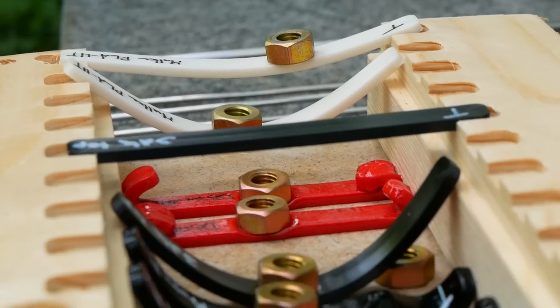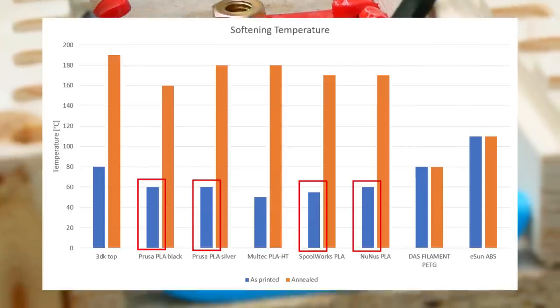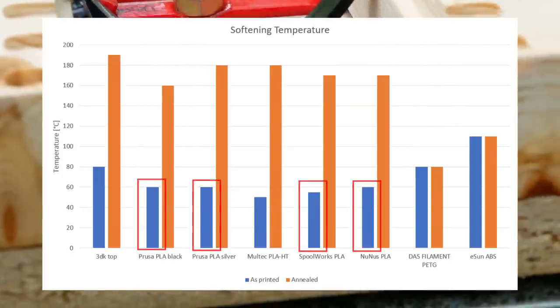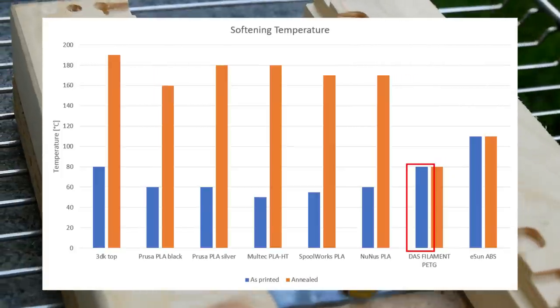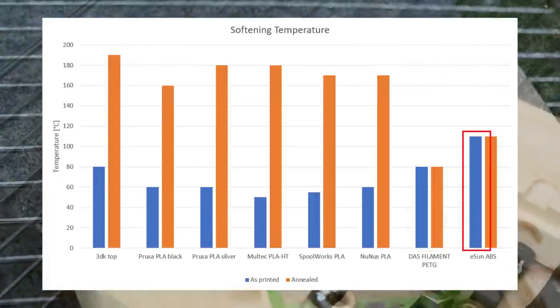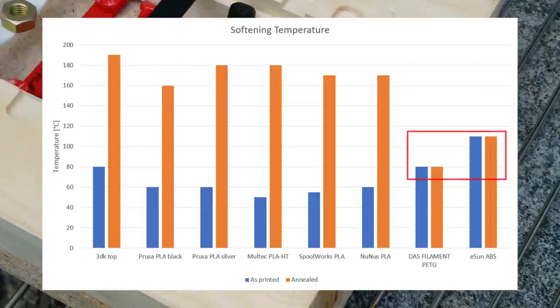So let's summarize the result. As we probably all know unannealed PLA is not suitable for high temperatures and failed at around 60 degrees. PETG got up to 80 degrees celsius and ABS up to 110.